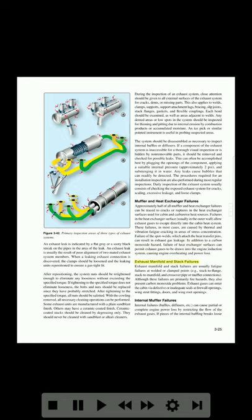Exhaust manifold and stack failures are usually fatigue failures at welded or clamped points — for example, stack to flange, stack to manifold, and crossover pipe or muffler connections. Although these failures are primarily fire hazards, they also present carbon monoxide problems. Exhaust gases can enter the cabin via defective or inadequate seals at firewall openings, wing strut fittings, doors, and wing root openings.